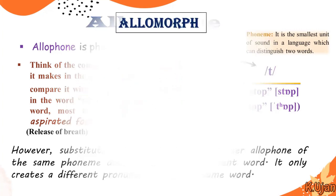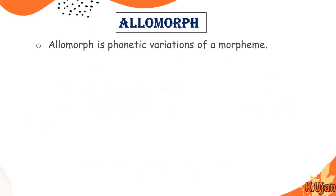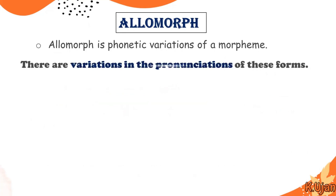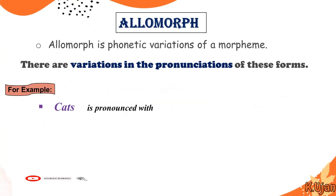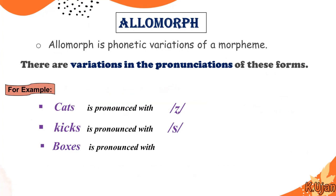Now I'm going to explain allomorph. An allomorph is a phonetic variation of a morpheme. There are variations in the pronunciation of these forms. For example, the word 'cats' has the sound /s/, 'kicks' has the sound /s/, and 'boxes' has the sound /ɪz/. These are all variations of a morpheme.